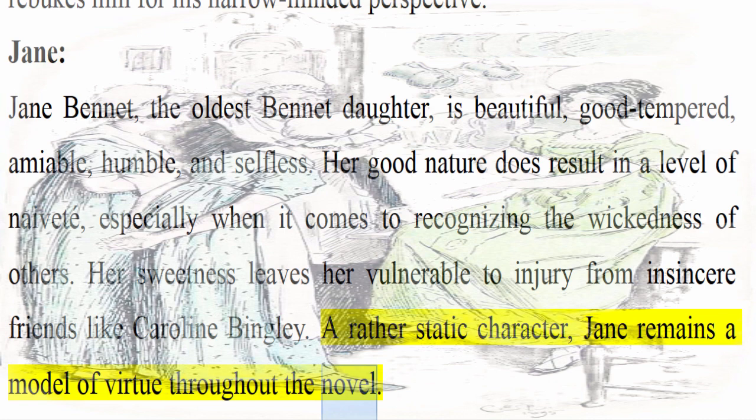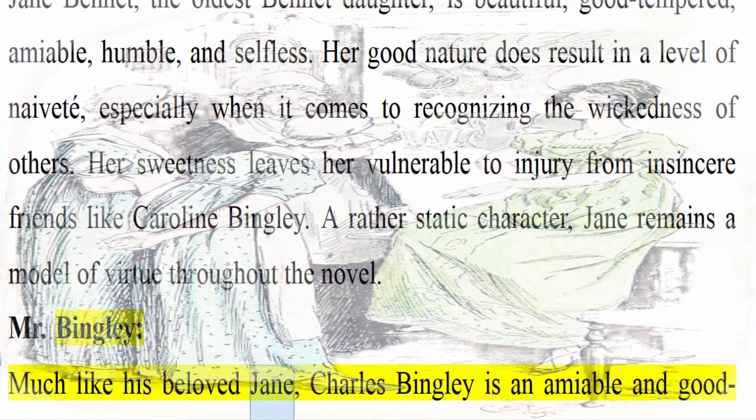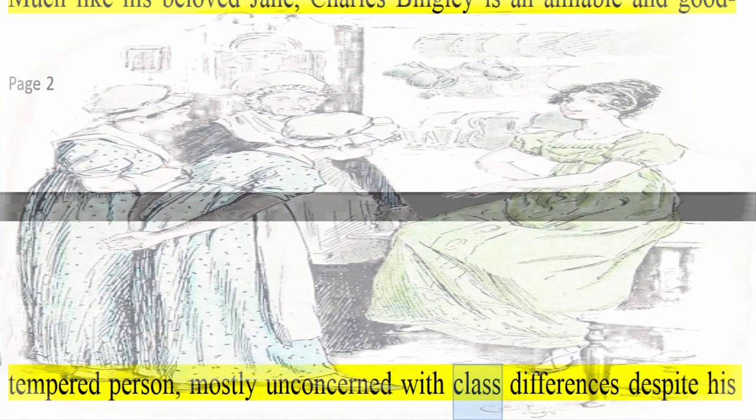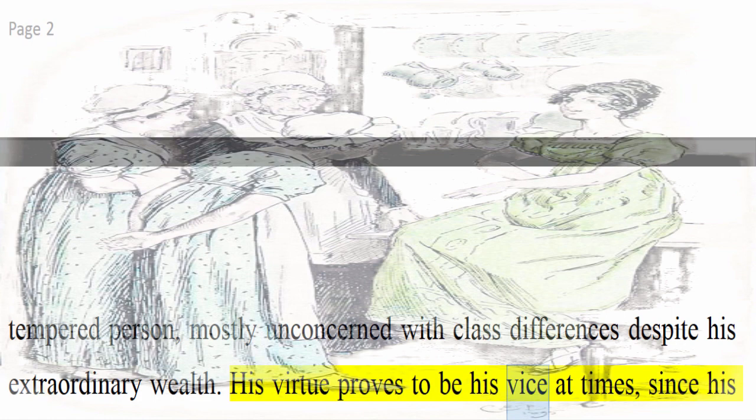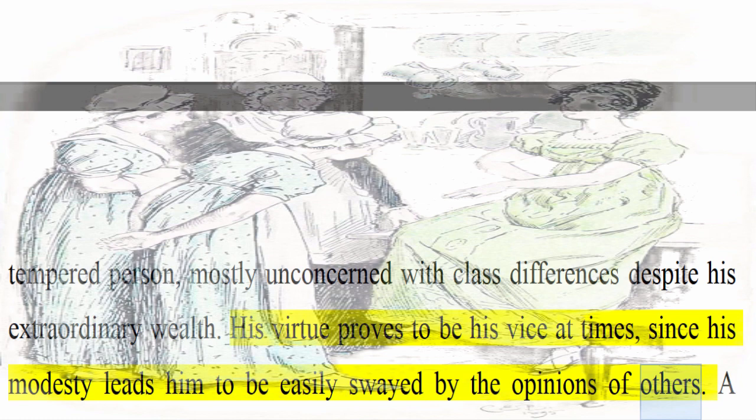Mr. Bingley: Much like his beloved Jane, Charles Bingley is an amiable and good-tempered person, mostly unconcerned with class differences despite his extraordinary wealth. His virtue proves to be his vice at times, since his modesty leads him to be easily swayed by the opinions of others. A mostly static character, Bingley remains pleasant and in love with Jane throughout the novel.